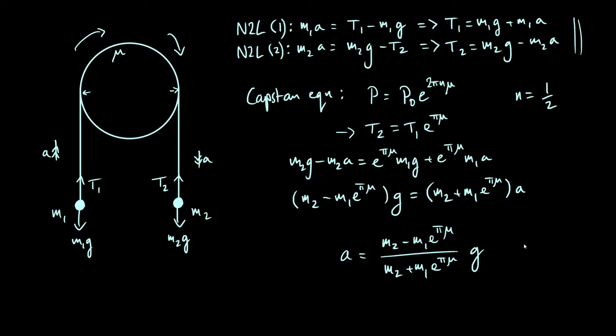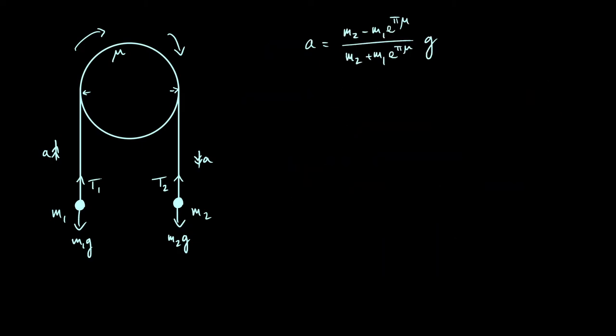So the more friction you have, you can kind of think of it as being equivalent to making mass 1 heavier, which is going to make it more difficult for the system to accelerate in this way. So we've derived the acceleration in the case when m2 is sufficiently massive to cause a downwards acceleration.